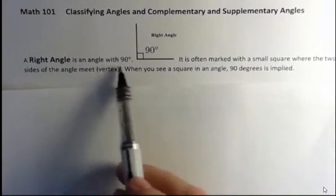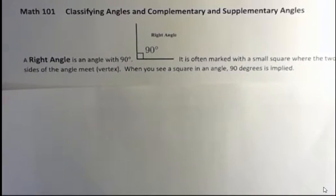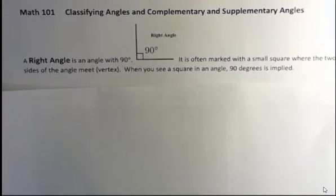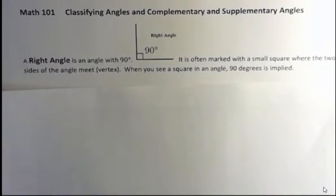A right angle is an angle with 90 degrees. When you see a little box there that means 90, so a lot of times they won't put the 90 and the 90 degrees is implied by the box. That box is right there at what we call the vertex, which is where the two sides of the angle meet.